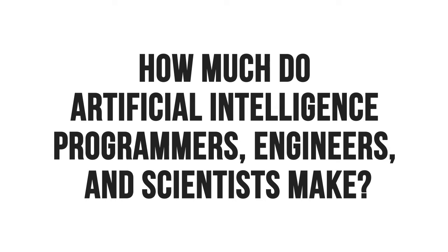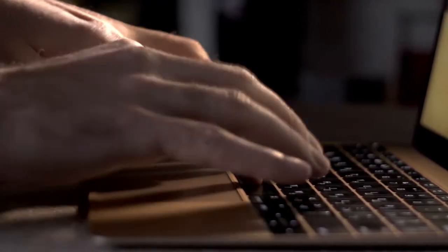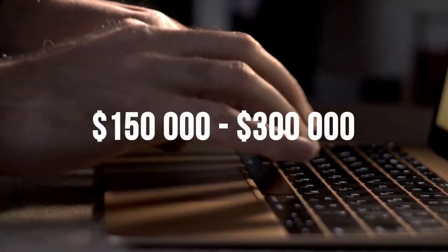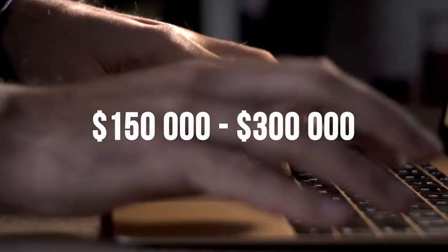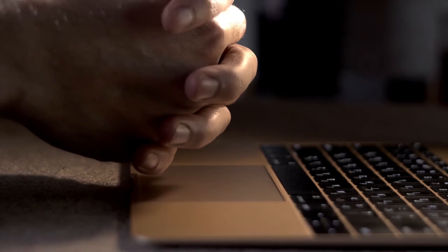How much do artificial intelligence programmers, engineers, and scientists make? The AI field is booming and there is huge demand for talent. Salaries for general programmers are already high, but if you are also an AI programmer, you can expect to earn from $150,000 per year to $300,000 and more. There have been reports of companies paying up to a million dollars a year in salary for an AI scientist. Obviously this is atypical, but if you are good at what you do, then you can definitely expect a very high salary.